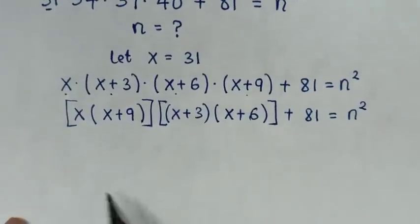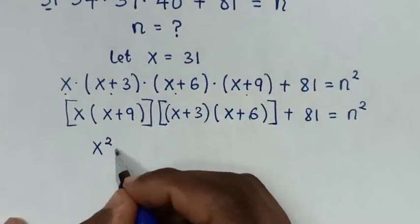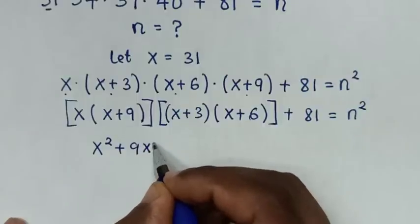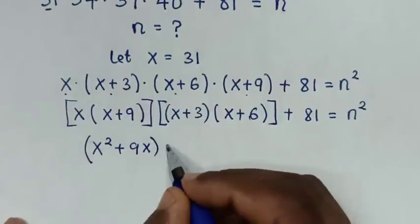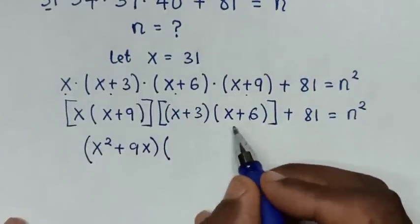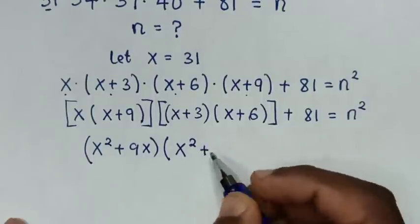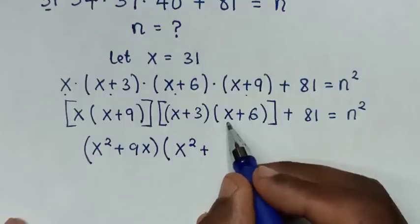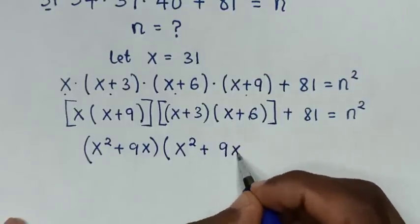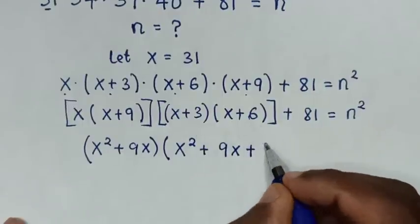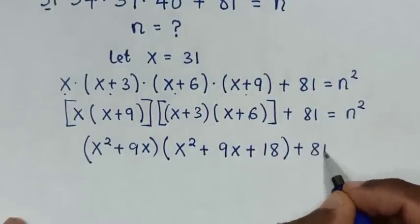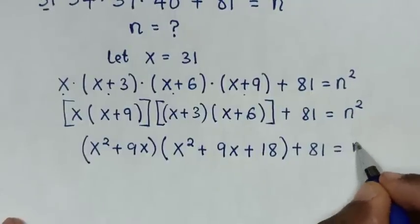Expanding each pair: x(x+9) gives x² + 9x. And (x+3)(x+6) gives x² + 6x + 3x + 18, so x² + 9x + 18. So our equation becomes (x² + 9x)(x² + 9x + 18) + 81 = n².